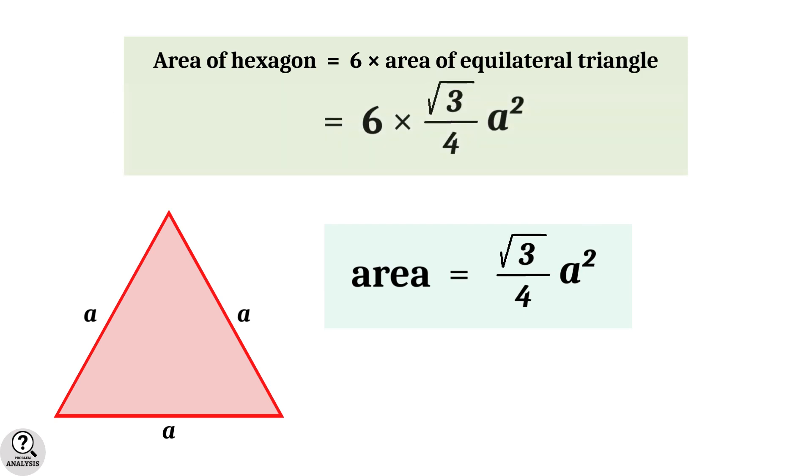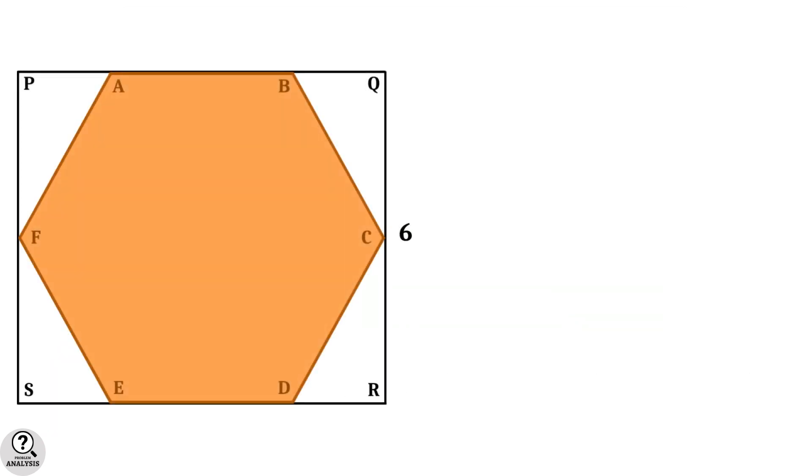Therefore, area of the hexagon will be 6 times √3/4 times a². So if we can find the value of the side length, then the answer is ready. As I told, let's take the side length of the hexagon as a units.